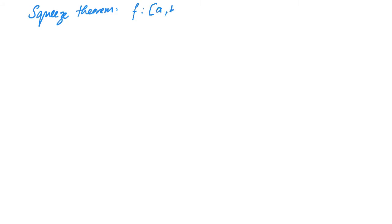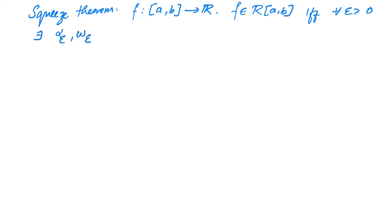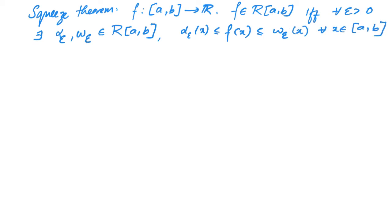Now we will see another form of the Cauchy criterion which is sometimes easier to use, called the Squeeze Theorem. The squeeze theorem states: let f be a function from [a,b] to ℝ. Then f belongs to R[a,b] if and only if for every epsilon greater than zero there exist two Riemann integrable functions alpha_epsilon and omega_epsilon from [a,b] to ℝ such that alpha_epsilon(x) ≤ f(x) ≤ omega_epsilon(x) for all x in [a,b], and the integral from a to b of (omega_epsilon − alpha_epsilon) is less than epsilon.